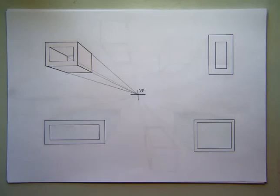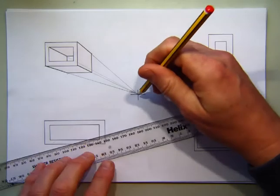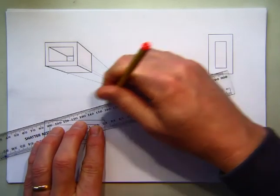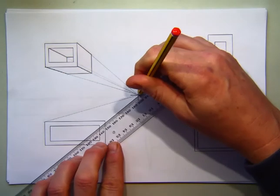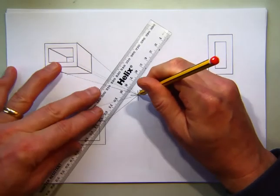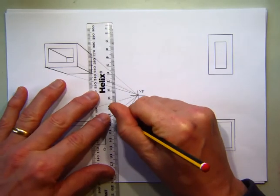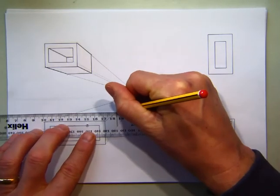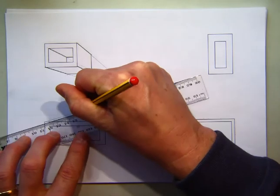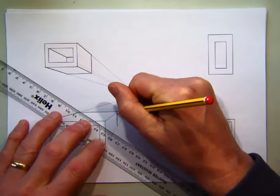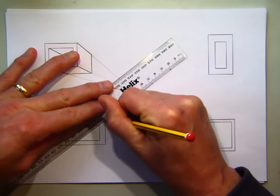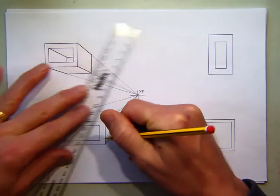We're now going to try and do the same thing to this rectangle at the bottom. Same principles. Take the corners of the outside back to the vanishing point, decide upon a depth, draw in your horizontal and your vertical line, darken in the sides so that it stands out. Then once you've done that we start to deal with the inside.